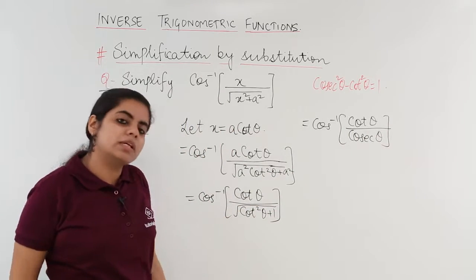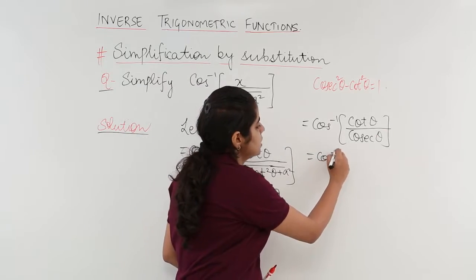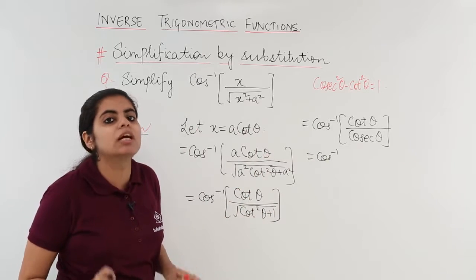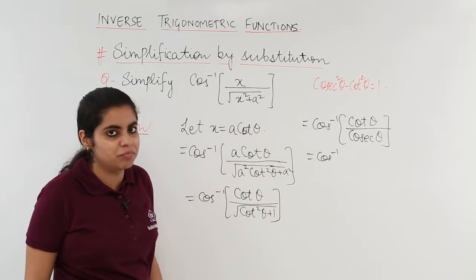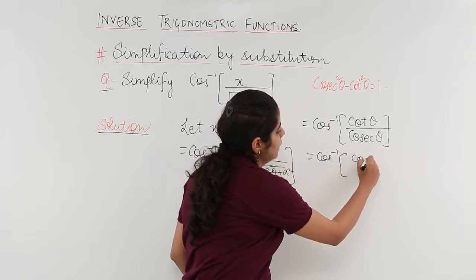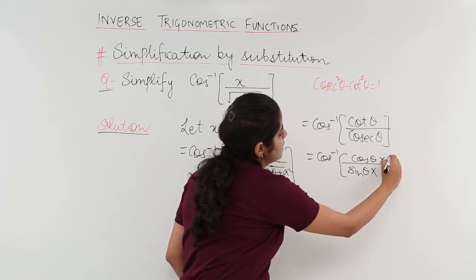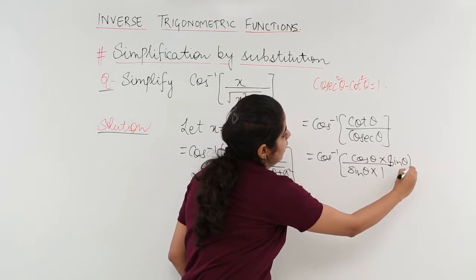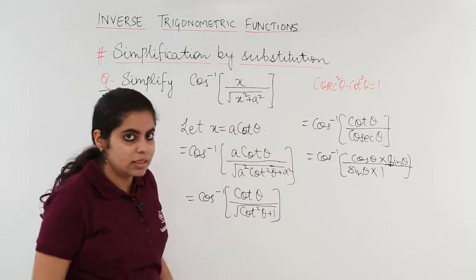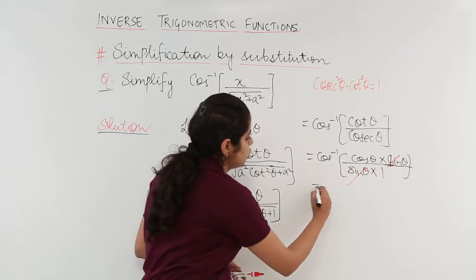We simplify cot θ and cosec θ in terms of sin and cos, because outside we have cos inverse, so we want a cos term to appear. cot θ = cos θ / sin θ, and cosec θ = 1 / sin θ. Dividing, sin θ cancels and we are left with cos inverse of cos θ.